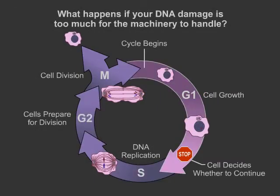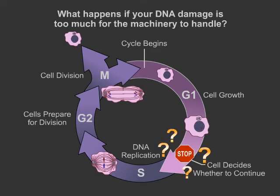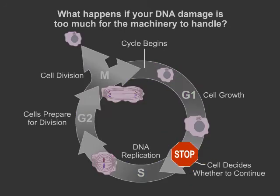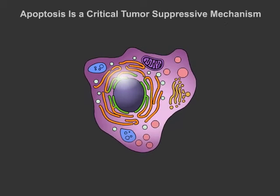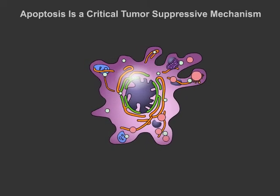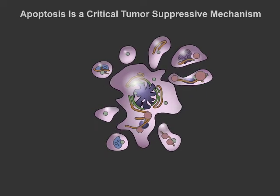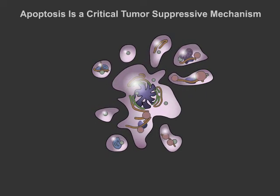Yet consider the case when the DNA damage is too much for the repair machinery to handle. When damage is detected at certain points of the cell cycle, the cell has to decide whether it should stop dividing and repair the damage, or stop dividing permanently. The cell can also choose to undergo apoptosis, or programmed cell death, in which individual cells break down so that their components can be recycled. This is an important tumor suppressor pathway, since cells that are damaged beyond repair are removed from the cell population.